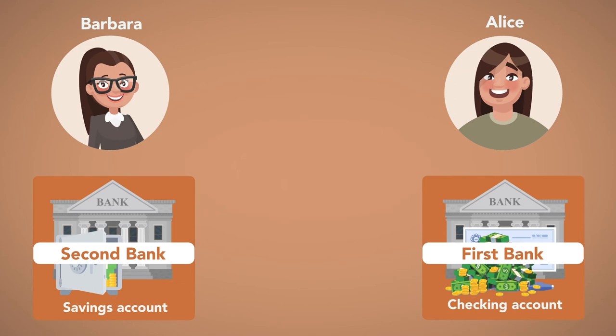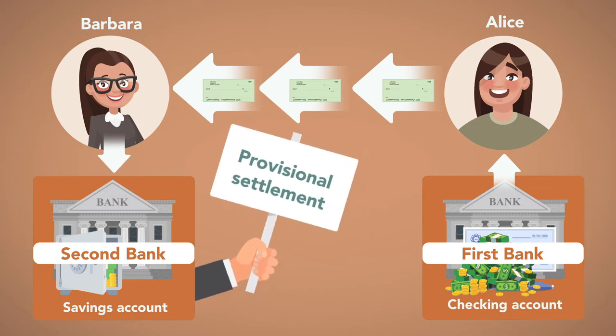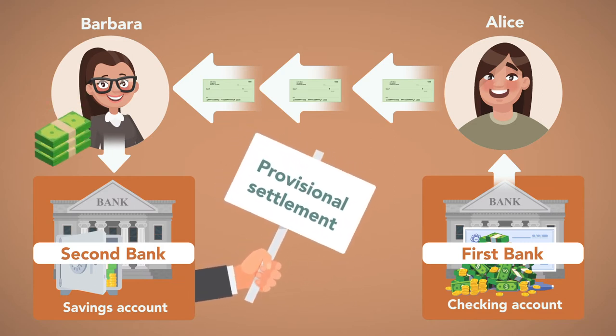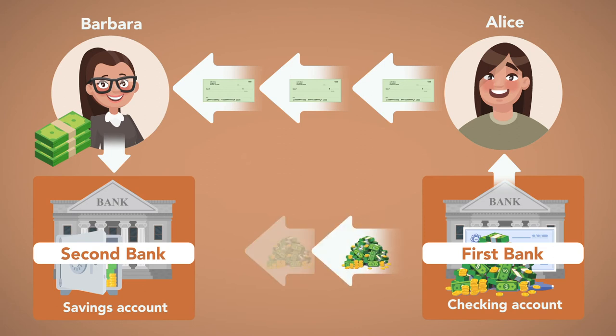For example, assume Alice has a checking account with First Bank and Barbara has a savings account with Second Bank. Alice writes Barbara a check drawn on her account at First Bank, and Barbara deposits the check into her savings account at Second Bank. Second Bank has made a provisional settlement and will make the amount of the check available for Barbara to use. Second Bank will then collect the value of the check from First Bank, the payer bank, and First Bank will deduct the amount of the check from Alice's account.